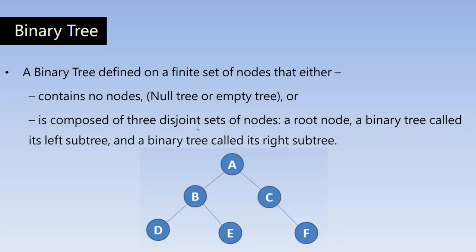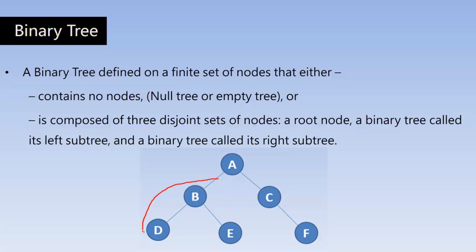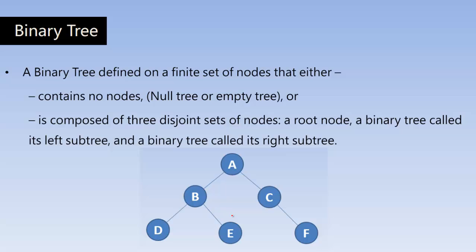A binary tree is composed of three disjoint sets of nodes: one root node, a binary tree called the left subtree, and a binary tree called the right subtree. A basic simple binary tree can be like this: a node, a left subtree, and a right subtree. This entire part is considered as the left subtree and this part is considered as the right subtree. D is considered to be the left subtree and E is considered to be the right subtree. And here, it has just got a right subtree.